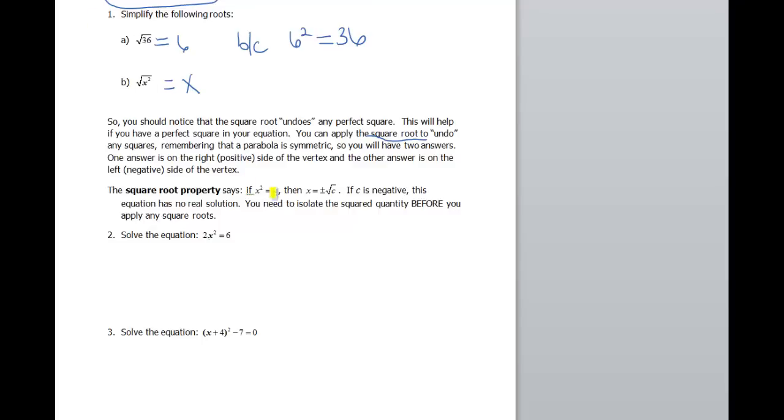Now the key here also is to remember that a parabola is symmetric. So we know we're going to end up with two answers. Not always, but typically we'll have two answers with these problems. One answer's gonna be on the right side of our vertex, the other answer's gonna be on the left side of the vertex.